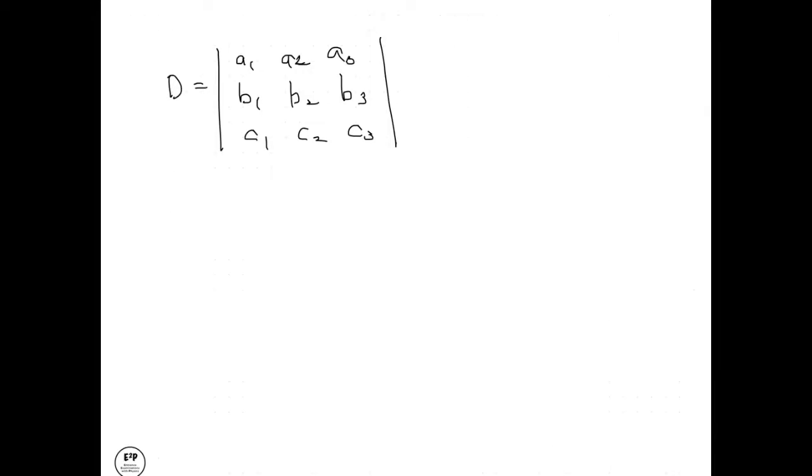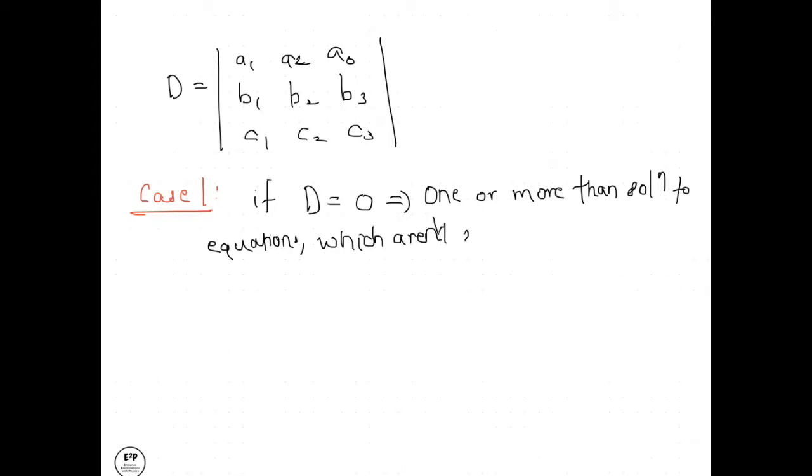Now we have conditions for this. Case 1: if our determinant D equals 0, then there will be one or more than one solutions—that means the equations which aren't zero and satisfy the scale.